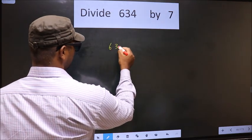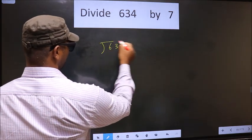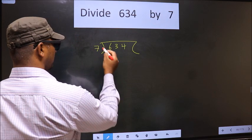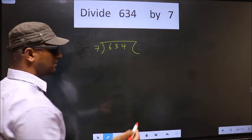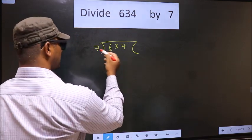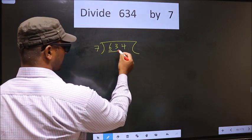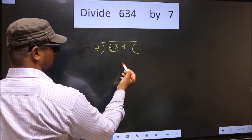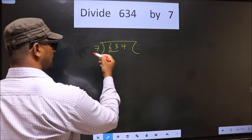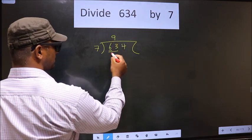That is 634 divided by 7. Now here we have 6, 6 smaller than 7. So we take 2 numbers, that is 63. When do we get 63 in 7 table? 7 nines, 63.